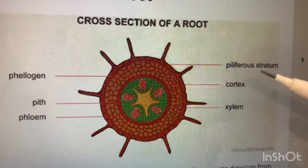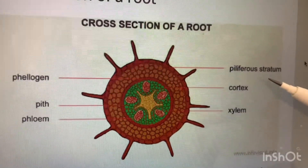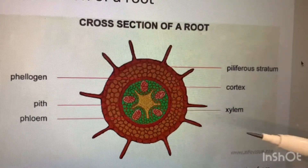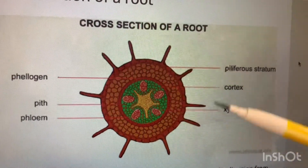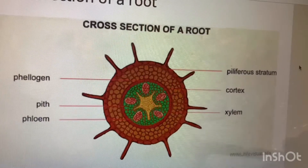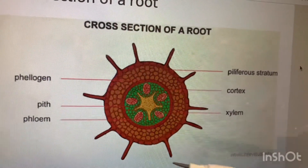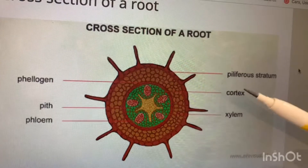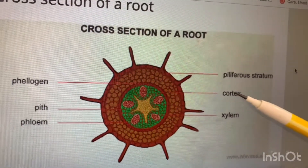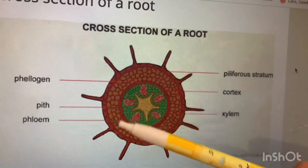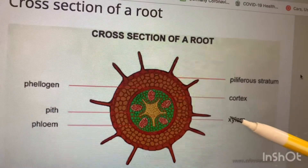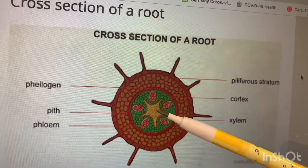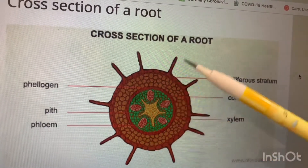In a cross-section of a root, we can identify several parts: the xylem, phloem, cortex, pith, phelogen, and piliferous layer. The piliferous layer is the set of cells on the outer layer that carries the root hairs. The cortex is the part of the root that protects the pith. Xylem is the woody part of the root. Phloem consists of the vessels through which sap circulates. The pith is the center of the root, and the phelogen is the part of the root that produces the cork.